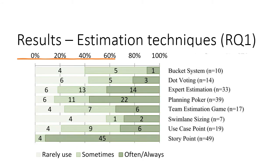This figure shows the results of estimation techniques in agile software development, presenting only the techniques actually used. As seen in the figure, the most used estimation technique is story points, followed by planning poker, expert estimation, and the least used technique is swim-lane sizing. To estimate, most participants use the Fibonacci sequence, followed by ideal days and t-shirt sizing as measurement units.